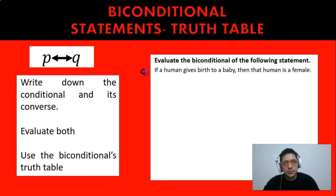So we have first the conditional which says: if a human gives birth to a baby, then that human is female. We know for a fact that if a human gives birth, then that human is going to be female. Yes, it's a woman, so that is a true statement. But we're going to see if the biconditional is true.